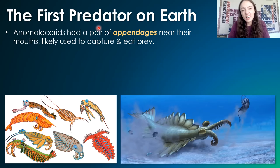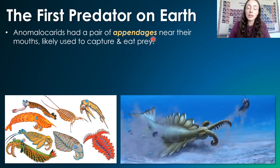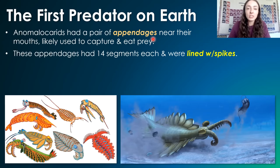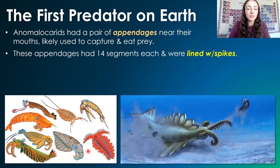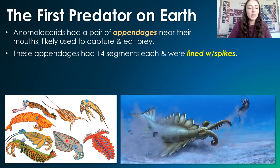So what did they hunt and eat prey with? They had a pair of appendages near their mouths that they used to capture and eat prey. These appendages had 14 segments and each were lined with spikes. It's important to note that among anomalocaridids in general, there was a lot of morphological diversity, so many of the body forms may have had just one or one branching type of appendage.